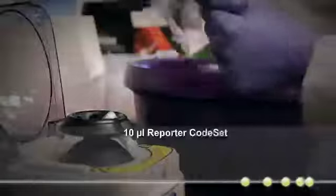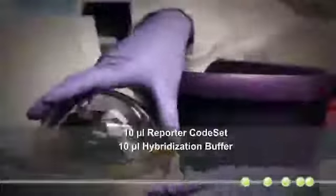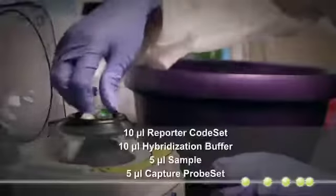Each hybridization will take place in a total of 30 microliters volume. In these 30 microliters, 10 microliters will be made up of reporter probes, 10 microliters by hybridization buffer, 5 microliters of your sample, and then finally 5 microliters will be made up of the capture probes.